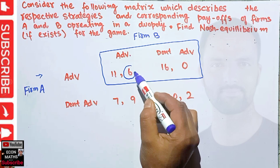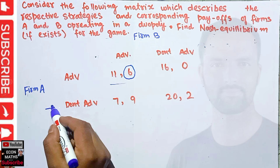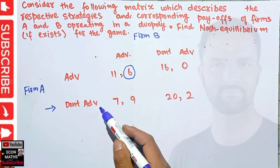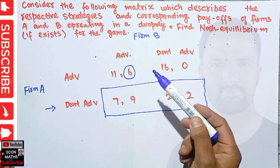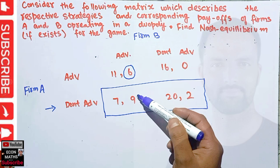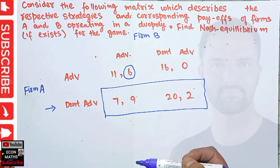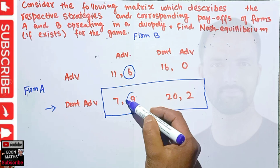Now, what if Firm A chooses not to advertise? Firm B again has two options: advertise or not advertise. By advertising, Firm B gets a payoff of 9; by not advertising, Firm B gets a payoff of 2. Since 9 is greater than 2, Firm B will choose to advertise. We circle this value as well.